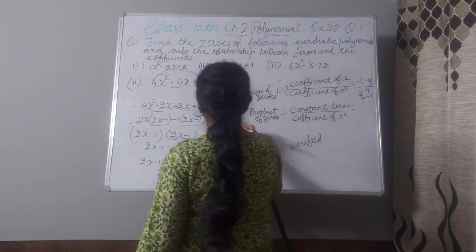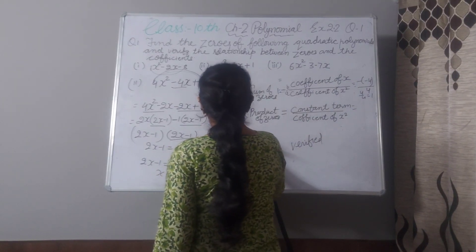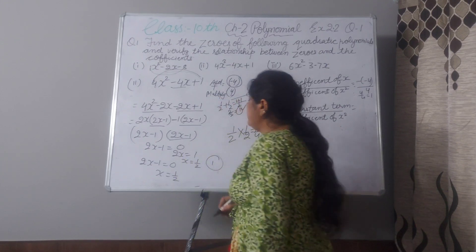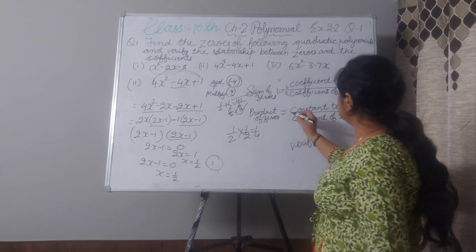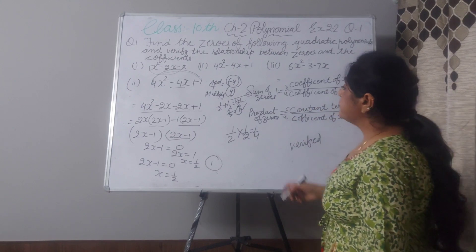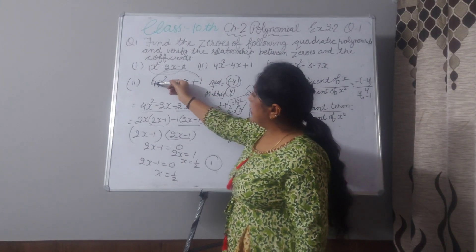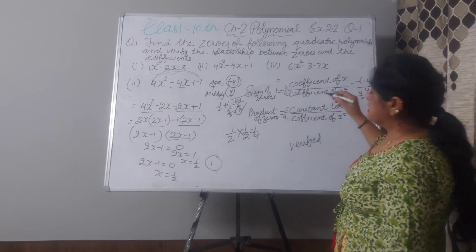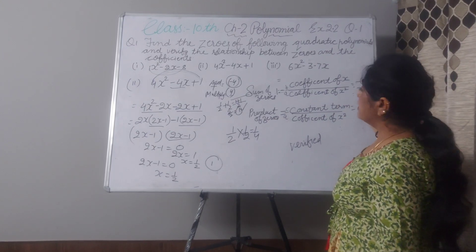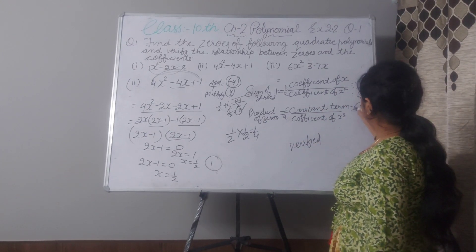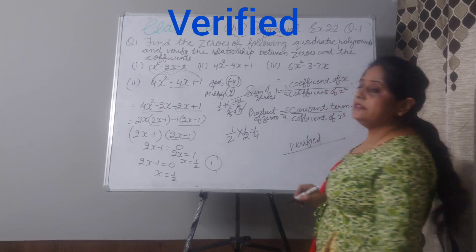Now product of zeros: 1/2 multiplied by 1/2 equals 1/4, which equals c by a. c is 1 and a is 4, so c/a equals 1 by 4. Verified.